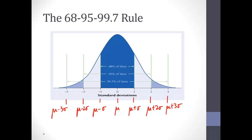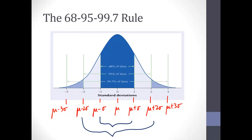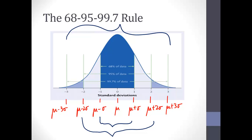One of the other properties we talked about for normal distributions is the 68-95-99.7 rule. That corresponds to 68% of the data being within one standard deviation of the mean. Going up and down one standard deviation captures 68%. Going two standard deviations up and two down gives 95% of the data. Going all the way out to three standard deviations gives 99.7% of the area under the curve — so almost all the area falls between plus and minus three standard deviations.